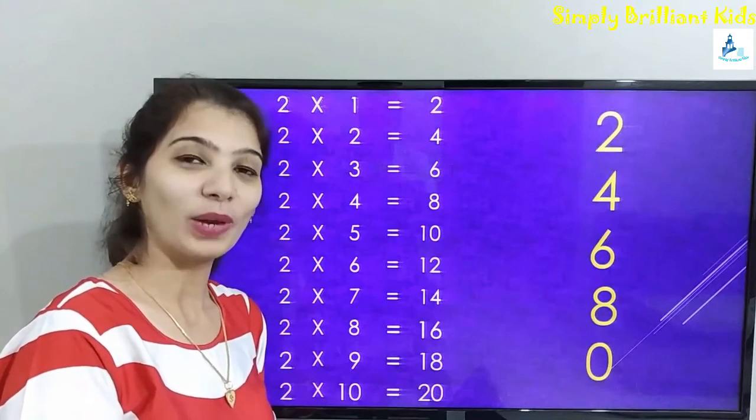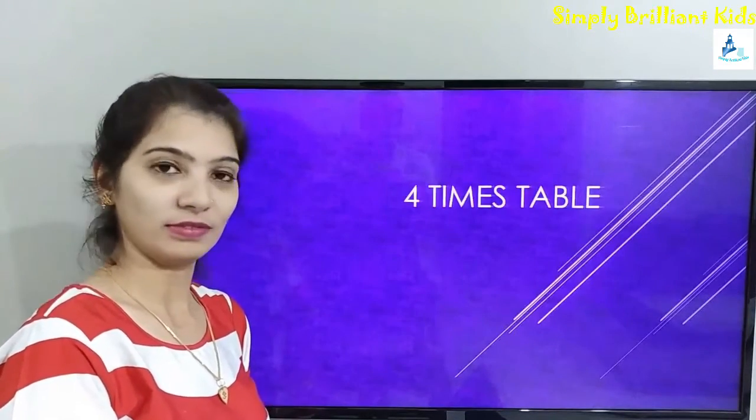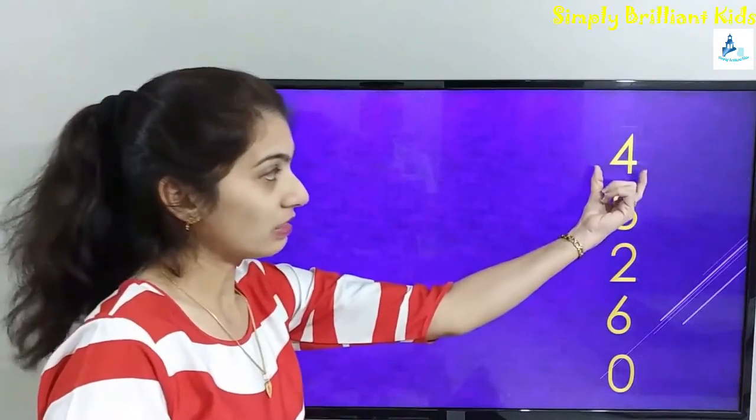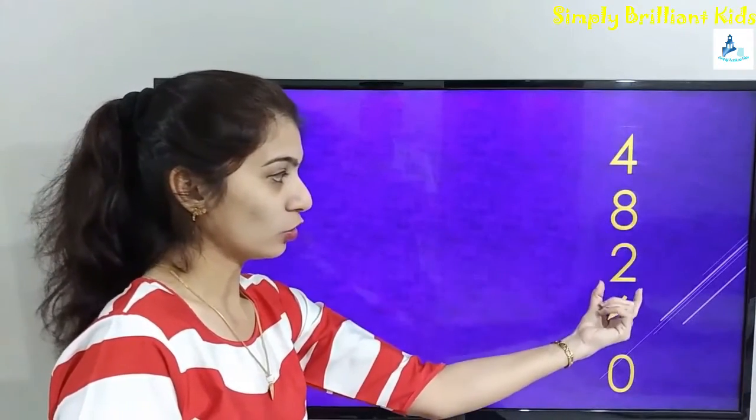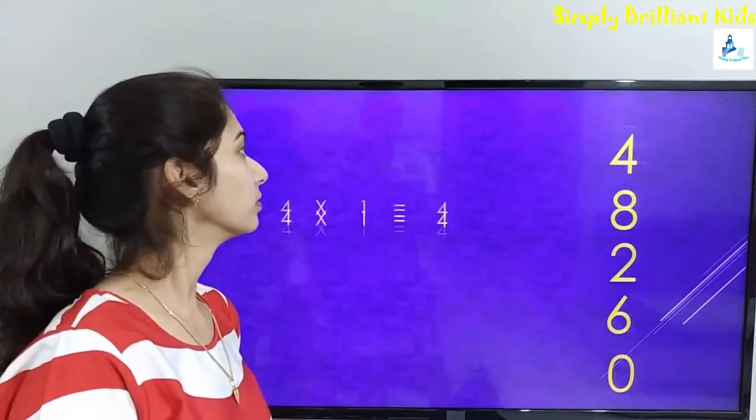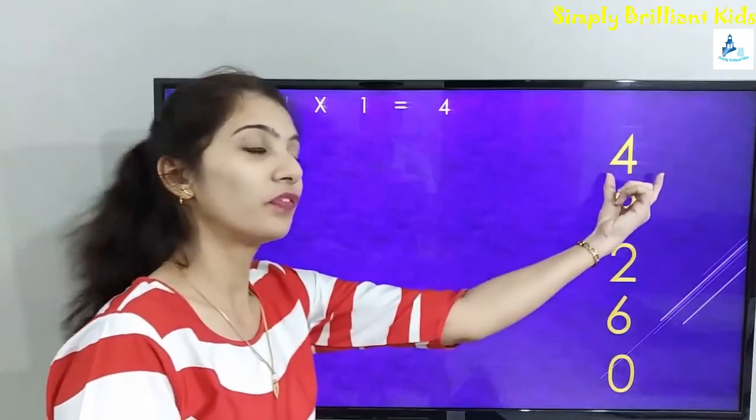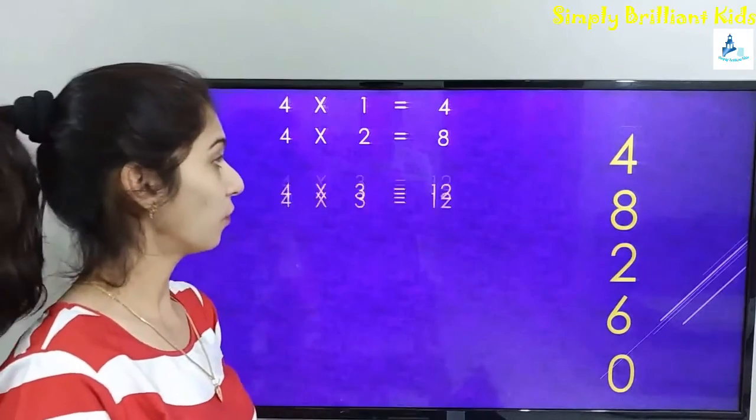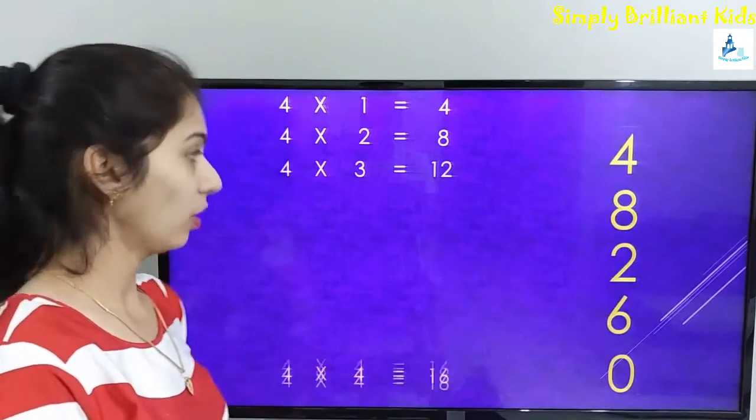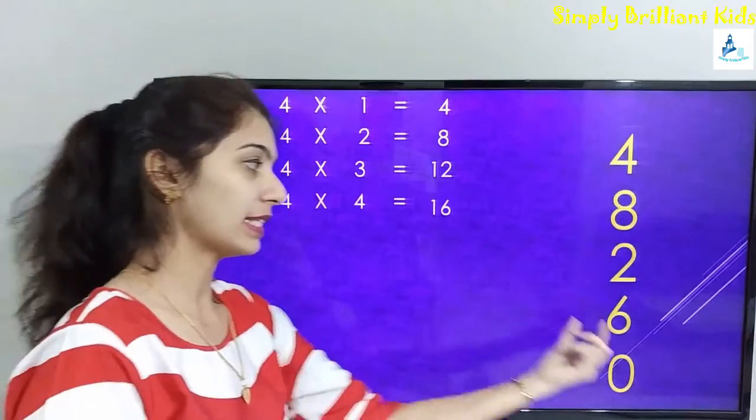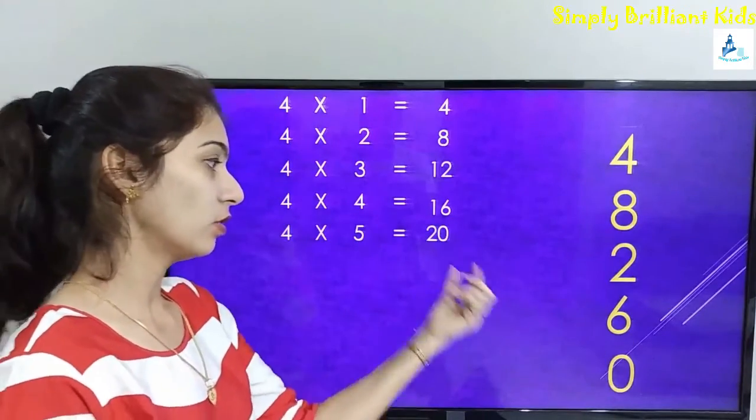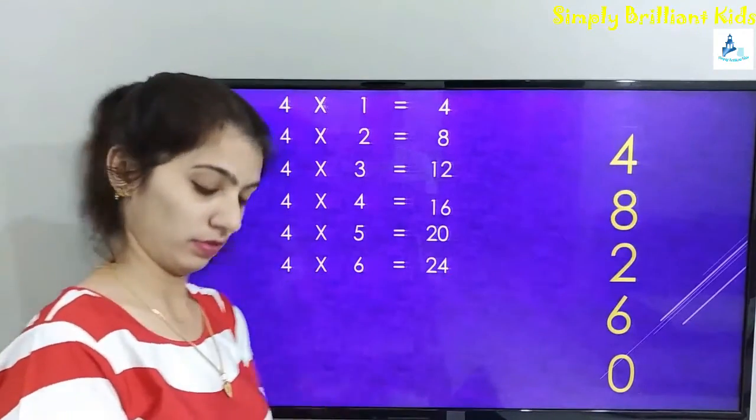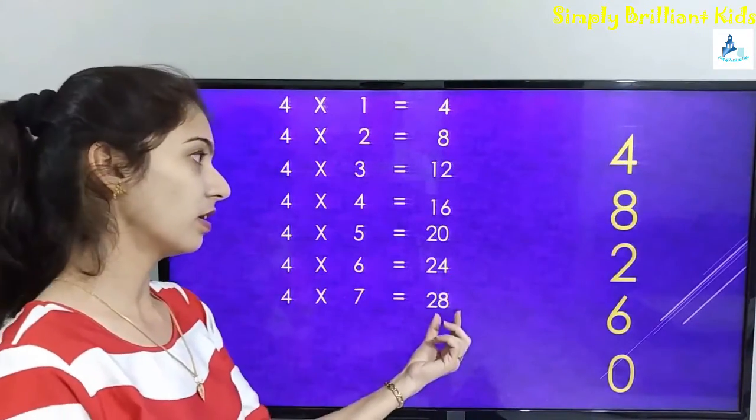Now let's learn four times table. Just remember the series: 4, 8, 2, 6, 0. Four ones are four, four twos are eight, four threes are twelve, four fours are sixteen, four fives are twenty.